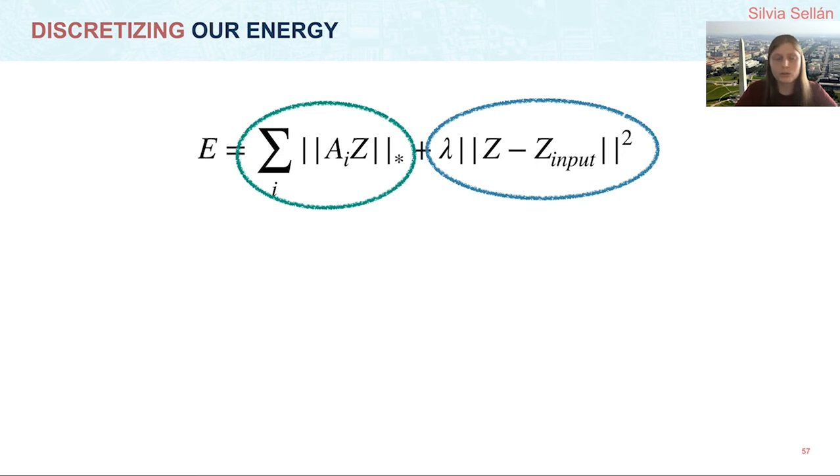Same happens with the blue circle, which combines a quadratic function, which is also convex, and the product with a constant, which is also convex. Summing two convex functions is also convex, which means that we have a total convex energy E.